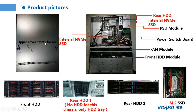Then we can take out the cover. This picture is the top view of the server. We can see the front hard drive module, the front hard drive backplane, the fan module — it can support three fans — the power switch, the power board, the PSU, the rear hard drive, and those two are the internal NVMe SSDs. This one is the RAID or SAS adapter card.